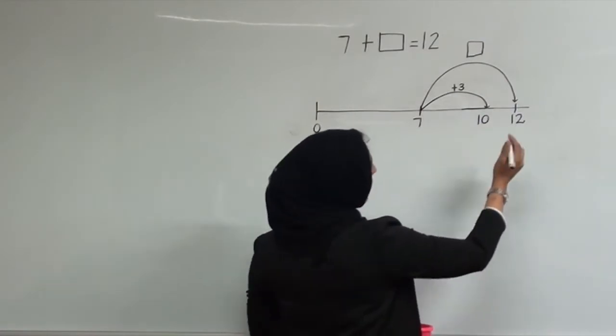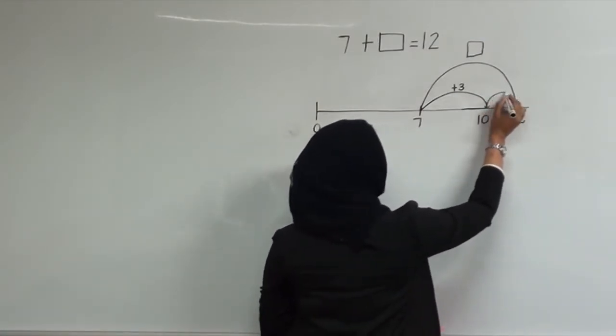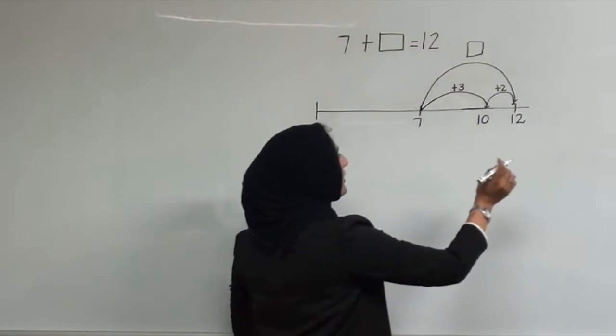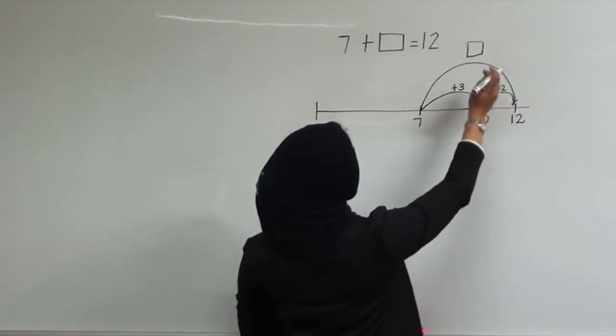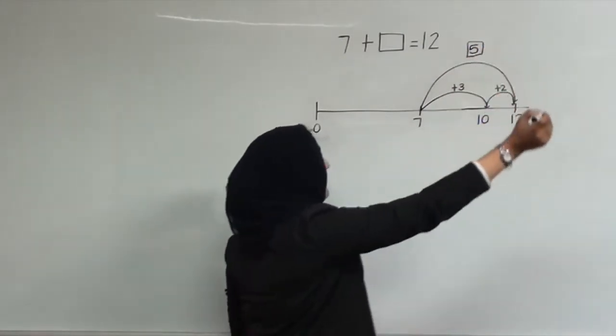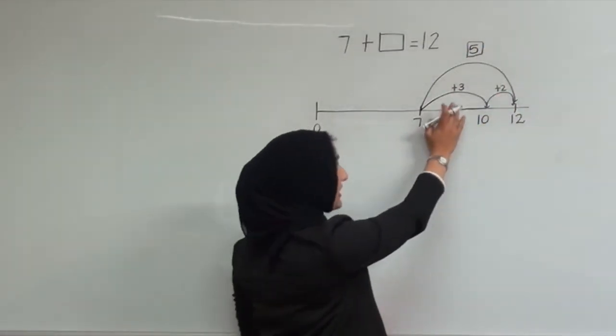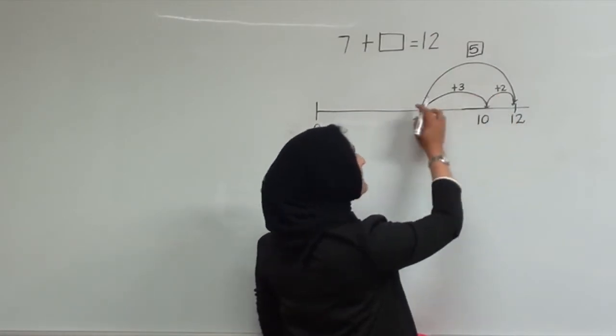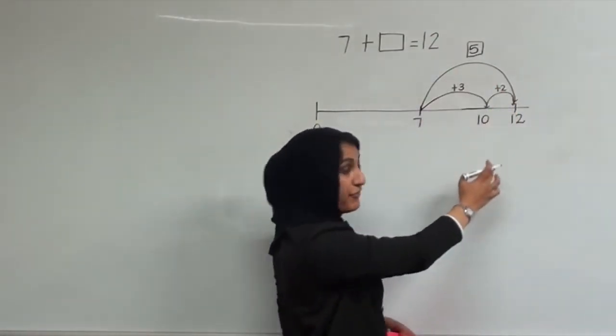And I need 2 more to get to 12. So 3 and 2 together make 5. As you can see here, a jump of 3 and a jump of 2 is the same as a jump of 5.